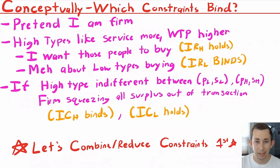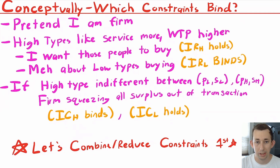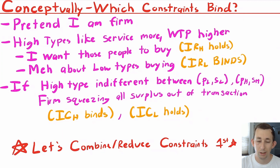The reason we go through this conceptually is that we have a lot of math ahead. Using this intuition to identify which constraints bind and which hold makes it easier. Looking at a problem, it may not always be clear — in that case, make your best guess, go through the math, and if something goes wrong, go back and change your assumptions. Writing down your thinking as you go helps your professor understand your train of thought, and it's beneficial on a test or homework question.